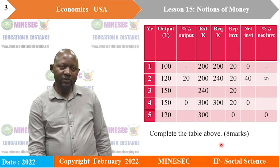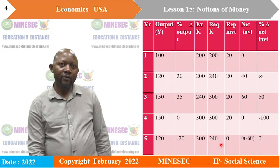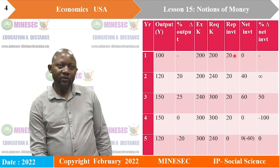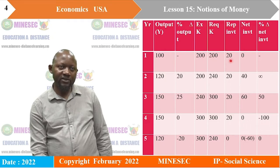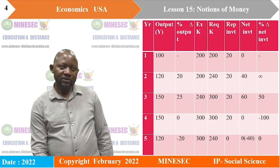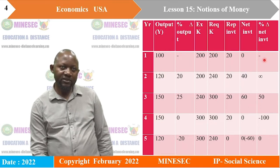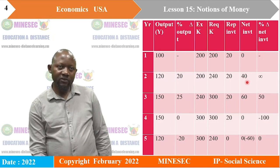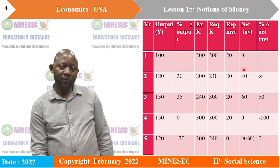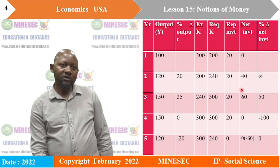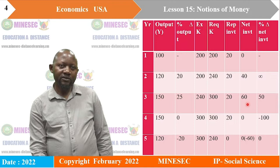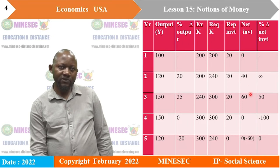For the percentage change in net investment, you work with the net investment column: take the new value, minus the old value, divided by the old value, times 100. So 40 minus 0, divided by 0, times 100 gives you infinity — anything divided by 0 is infinity. Then 60 minus 40, divided by 40, times 100 gives you 50. Continue the same way to get the remaining values.